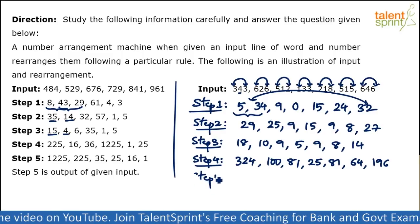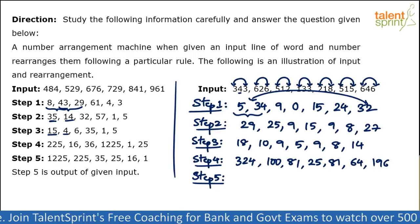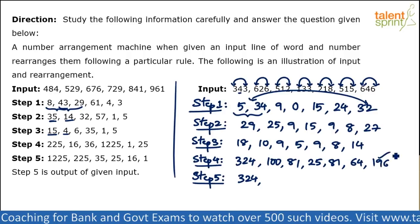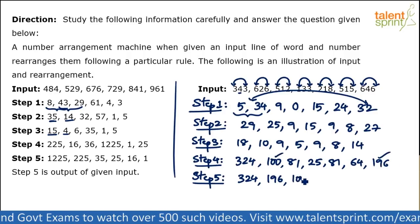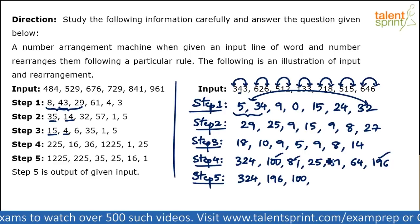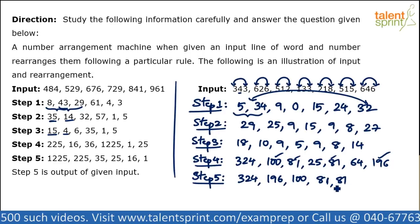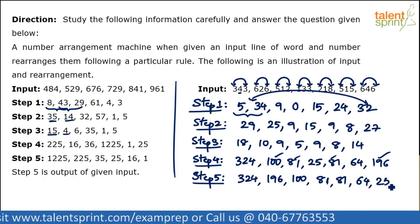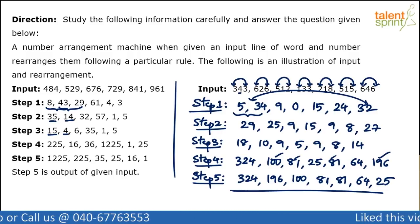For the last step, we arrange the numbers in descending order. Starting with 324 as the highest, followed by 196, then 100, then 81 (which appears twice), then 64, and finally 25. So the final output is: 324, 196, 100, 81, 81, 64, 25.